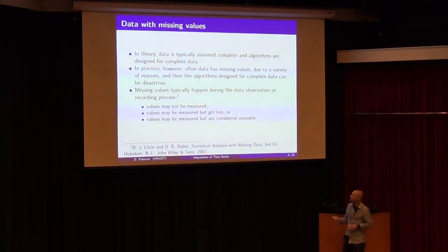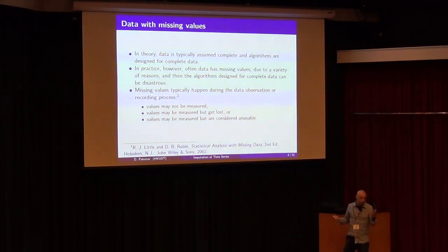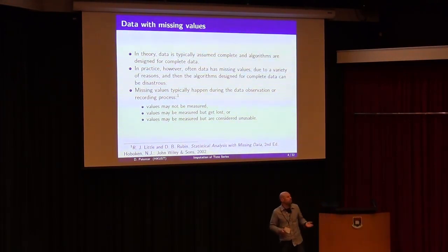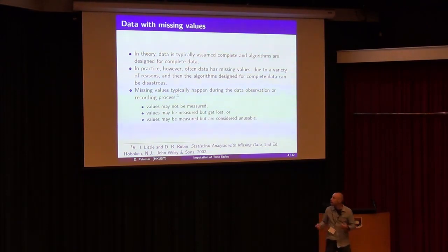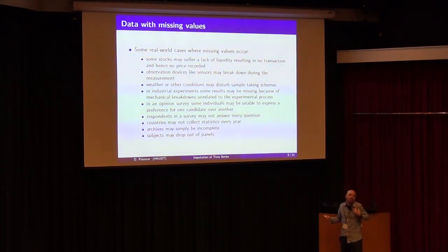Let me start with the motivation. Sometimes we have missing values and then nothing is going to work, so we need to do something about that. This is a practical thing. Sometimes values are not measured for some reason. Sometimes they are measured, but they get lost, or there is some corruption on the storage. And sometimes they are measured, but they are wrong somehow — they could be an outlier or something. So there are many applications where you have these missing values.